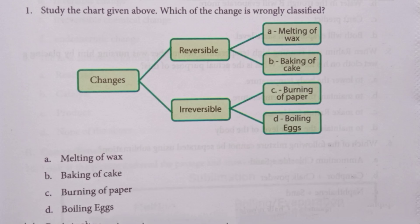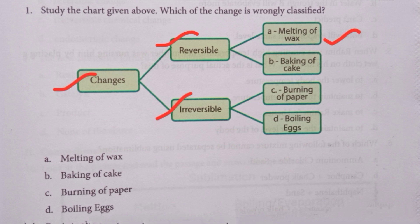First question: study the chart given above. Which of the changes is wrongly classified? The changes are divided into two types: reversible and irreversible. They give some examples from each. First, reversible — two examples. Melting of wax is correct; it is a reversible example.